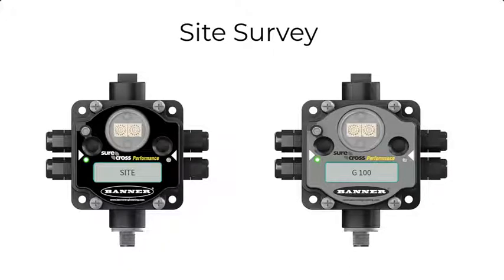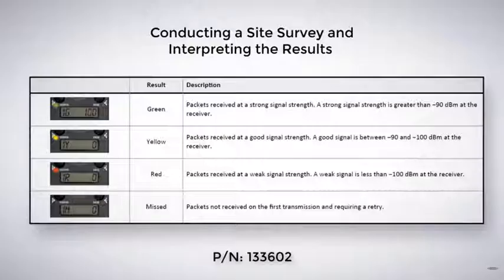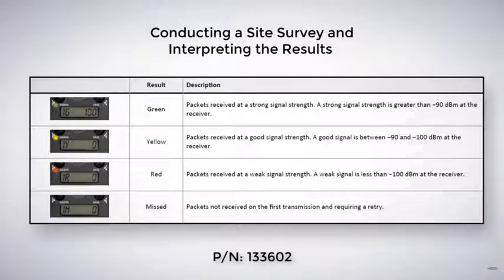Site surveys display the signal strength between the gateway and the bound nodes. G indicates a strong signal, Y a good signal, R a weak signal, and M equals missed packages. Any missed packages will automatically be resent. Weak and missed packages don't necessarily mean your application has inadequate signal strength — even if 20% of the signals are missed, this could still be acceptable for your particular application.